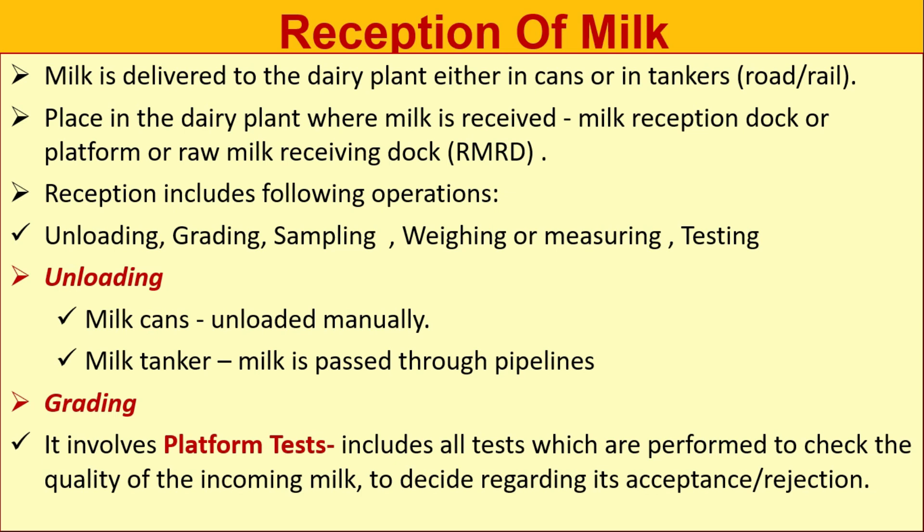Milk is delivered to the dairy plant either in cans or in tankers via road or rail. The place in the dairy plant where milk is received is known as the milk reception dock, or platform, or Raw Milk Receiving Dock (RMRD). Reception includes the following operations: unloading, grading, sampling, weighing or measuring, and testing.